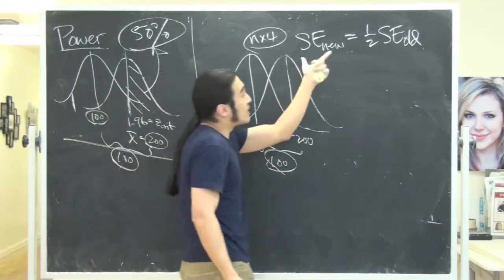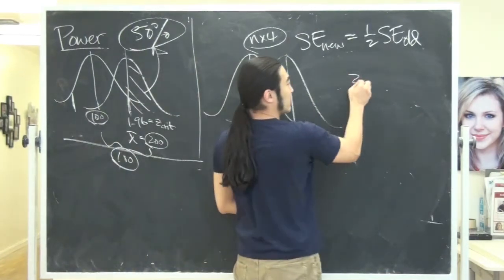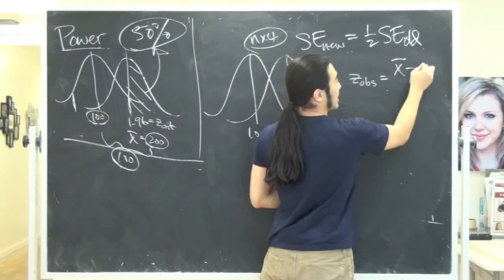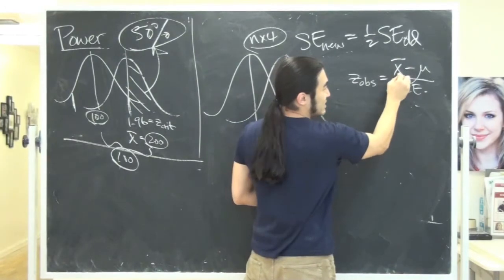However, because you mess with the standard errors, when you compute, remember how you compute a z-crit, or z-observed even. If I compute a z-observed, isn't it something like your sample minus what you expected over the standard error?